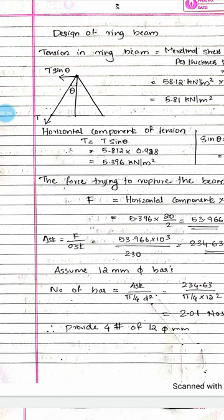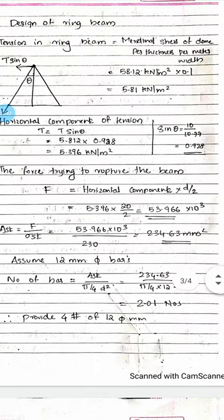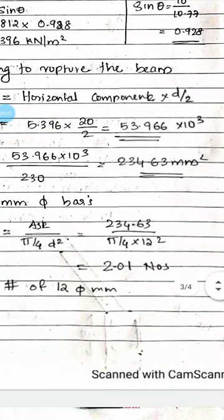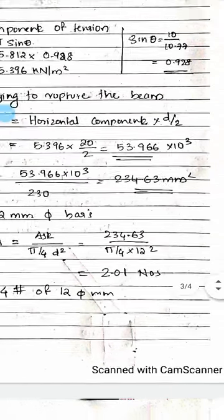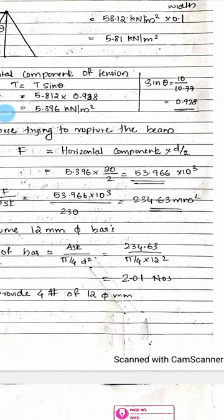The AST for the ring beam equals F divided by sigma ST. We assume 12 mm diameter bars. The number of bars equals total AST divided by AST of a single bar, giving approximately 2.10. Since we round up and use even numbers in a ring beam, we provide 4 bars of 12 mm diameter.